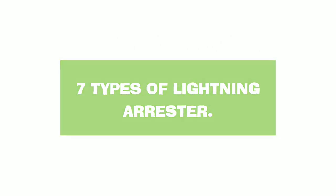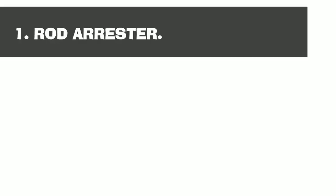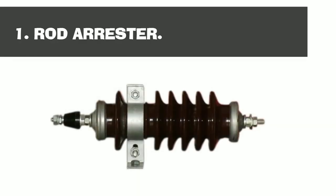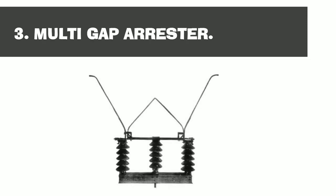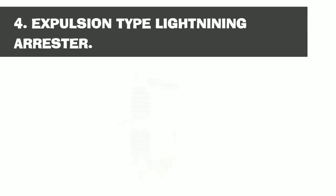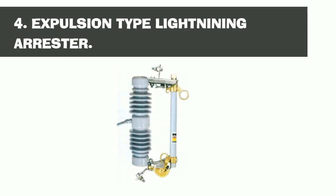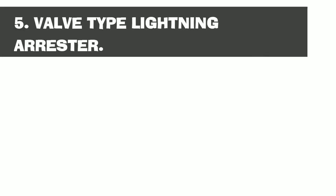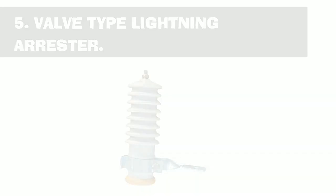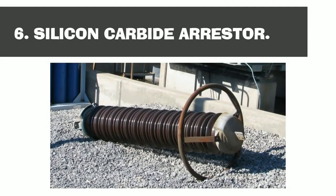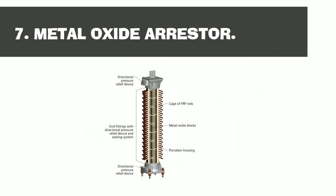7 types of Lightning Arrester: 1. Rod Arrester. 2. Horn Gap Arrester. 3. Multi Gap Arrester. 4. Expulsion Type Lightning Arrester. 5. Valve Type Lightning Arrester. 6. Silicon Carbide Arrester. 7. Metal Oxide Arrester.